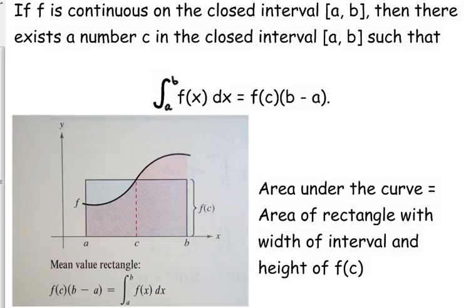The right side is representing the area of a rectangle with the width of the interval, that's the b minus a, and the height of f of c. So there is some c value in this interval, so that if you find its y value, and you draw a rectangle using that height and the width of your interval, the area of this rectangle is the same as the area under the curve. That's what the mean value theorem for integrals is all about.